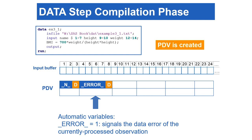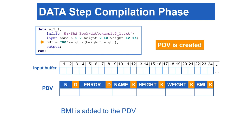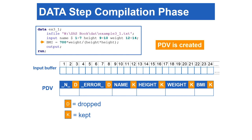The automatic variable _ERROR_ is an indicator variable with values of 1 or 0. _ERROR_ equaling 1 signals a data error for the currently processed observation, such as reading data with an incorrect data type. During the compilation phase, SAS scans each statement in the Datastep. When it scans the input statement reading the name, height, and weight variables, SAS allocates one space for each of these variables in the PDV. When SAS scans the assignment statement, BMI is also added to the PDV. Some variables in the PDV are marked with D for dropped; others are marked with K for kept. Only variables marked with K will be written to the output dataset. Automatic variables are always marked with D, so they are never written out.